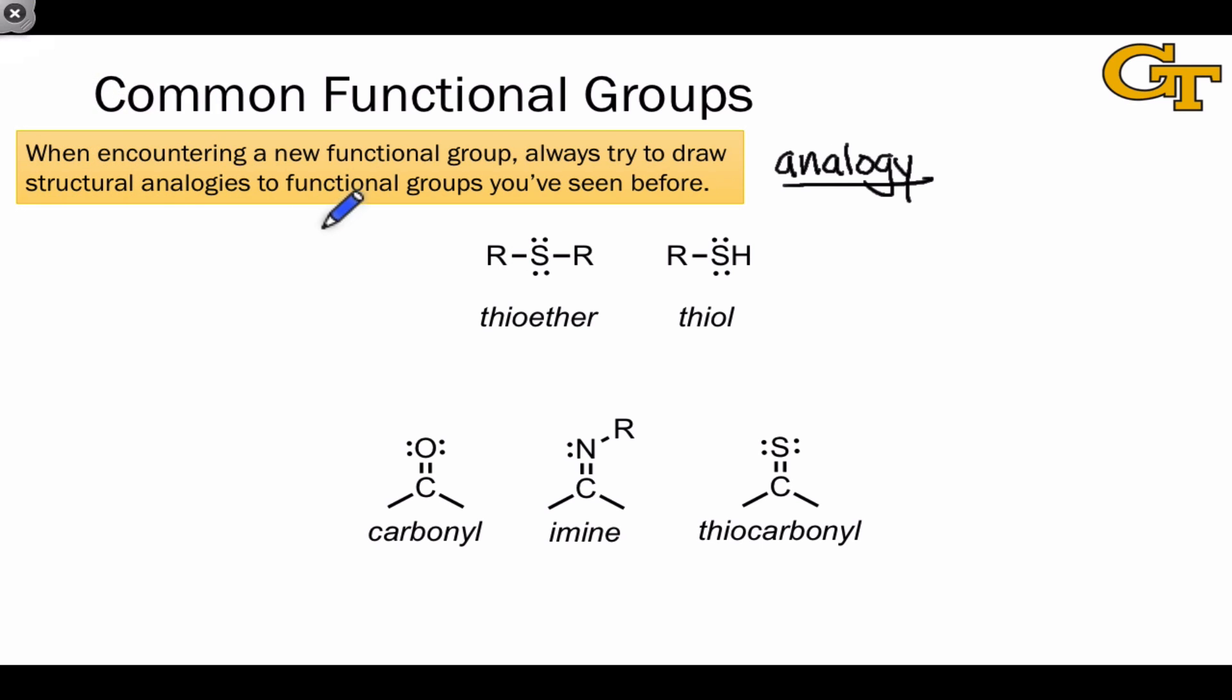So for example, on this slide I've shown a couple of examples of sulfur-based functional groups that have more familiar analogies in the second row of the periodic table. For example, the thioether is analogous to the ether, as suggested by its name, and the thiol is analogous to the alcohol, also suggested by the name of the sulfur-containing functional group.